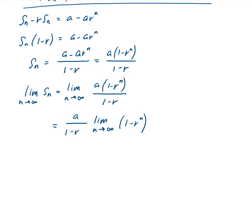If the magnitude of R is between 0 and 1 — for example, if R is 1/2 — then when you take 1/2 to the power of infinity, that's going to go to 0. So the limit of 1 minus R to the N is going to leave us with 1, because R to the N goes to 0 when the magnitude of R is between 0 and 1. That gives us A divided by 1 minus R.